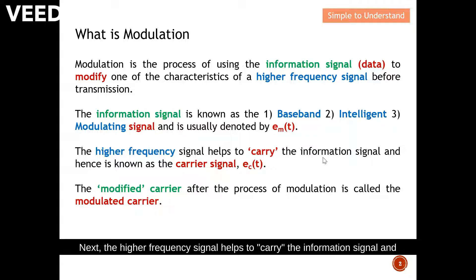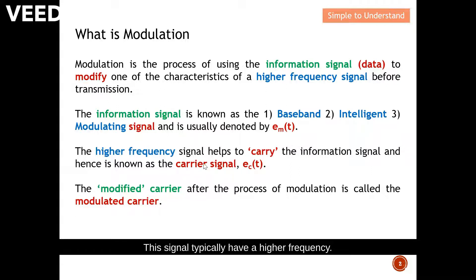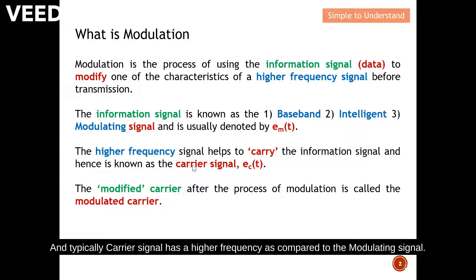Next, the higher frequency signal helps to carry the information signal and hence is known as the carrier signal, which is denoted as c(t). This signal typically has a higher frequency. The carrier is tasked to carry the information from one point to another, and typically the carrier signal has a higher frequency compared to the modulating signal.